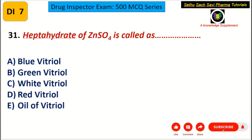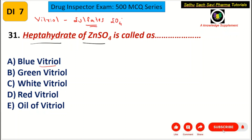Question: heptahydrate of zinc sulfate is called as — choice A: blue vitriol, B: green vitriol, C: white vitriol, D: red vitriol, or E: oil of vitriol. All these choices contain the word 'vitriol'. Vitriols are chemical compounds comprising sulfates — SO₄²⁻ — they are sulfates of certain metal ions.